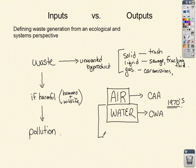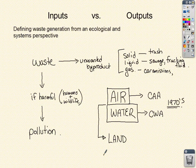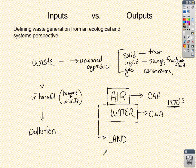As a result, the outputs and waste we were producing have now become a land problem. Laws are starting to be passed to help protect the land. We continue to generate waste, but we move it from one location to another.